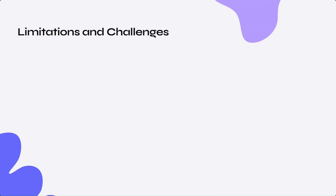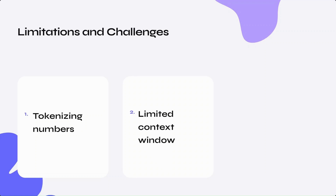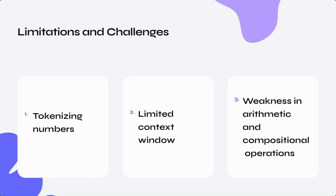However, it does come with a few challenges. Language models tokenize numbers based on their frequency of occurrence in training data, which can result in numbers being broken down inconsistently, making it challenging to learn basic numerical operations. LLMs may also have a limited context window, which is a challenge for multivariate time series problems requiring larger context. This can affect their ability to capture long-term dependencies, and if important information is outside the context window, it may lead to suboptimal forecasting performance. Current LLM architecture may also have limitations in performing precise arithmetic and recursive operations, which can challenge certain complex time series forecasting tasks.